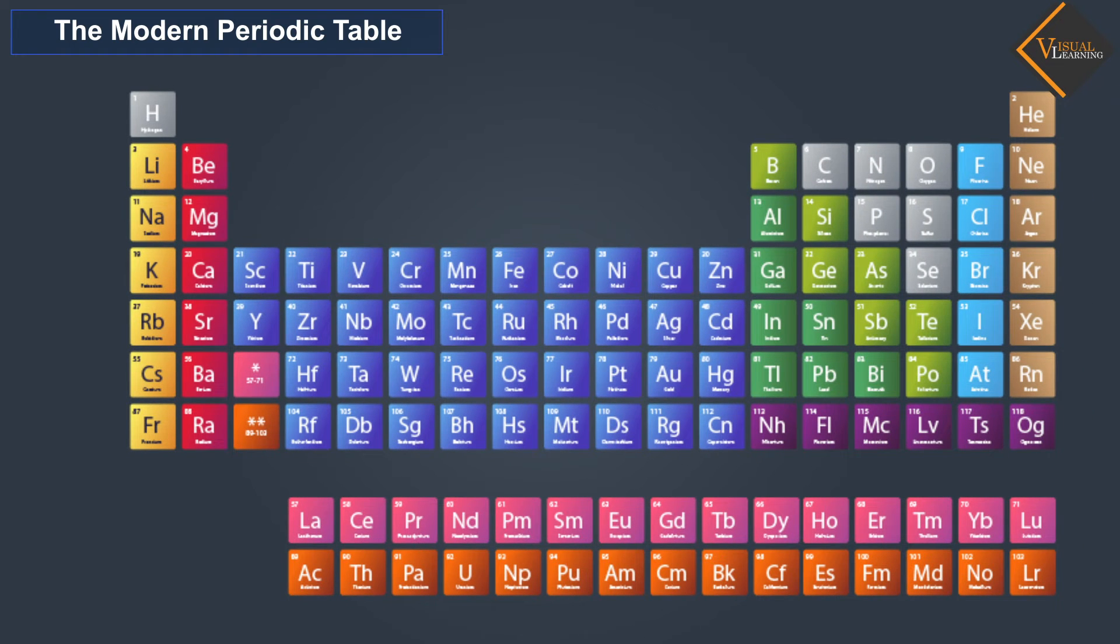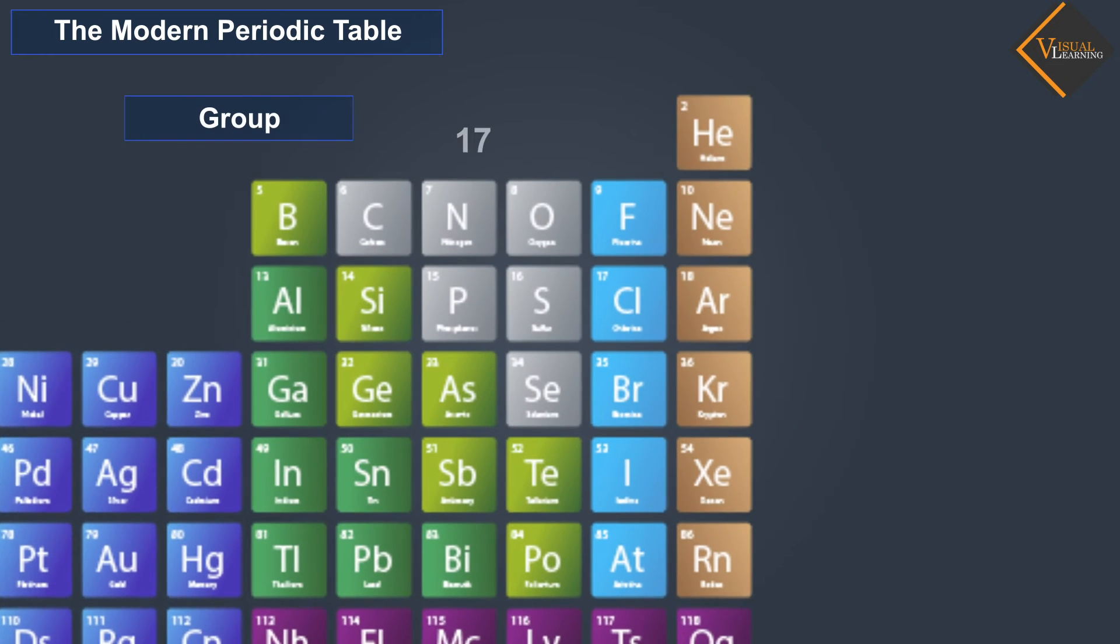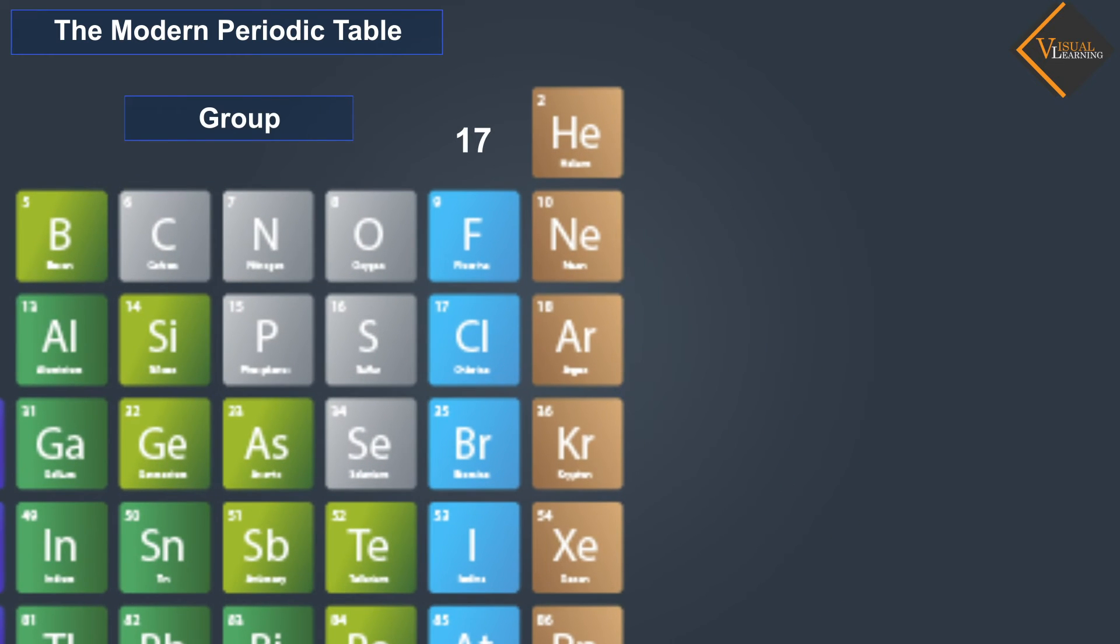For example, elements fluorine and chlorine belong to group 17. How many electrons do fluorine and chlorine have in their outermost shells? You will find that all these elements contain the same number of valence electrons.